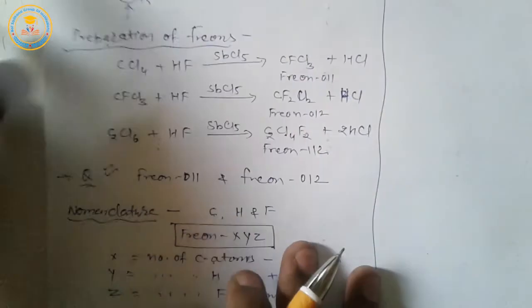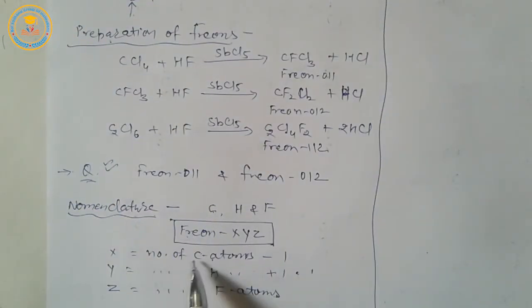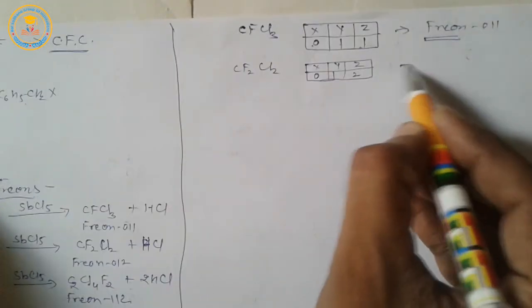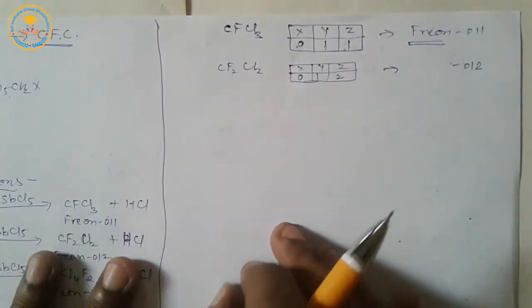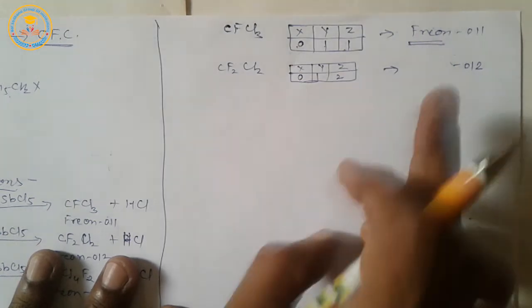Similarly, X equals number of carbon atoms in CF2Cl2, 1 minus 1 equals 0. Y equals number of hydrogen atoms in CF2Cl2, which is 0, so 0 plus 1 equals 1. And Z equals number of fluorine atoms in CF2Cl2, which is 2. So its naming is Freon 012, or Freon-12.